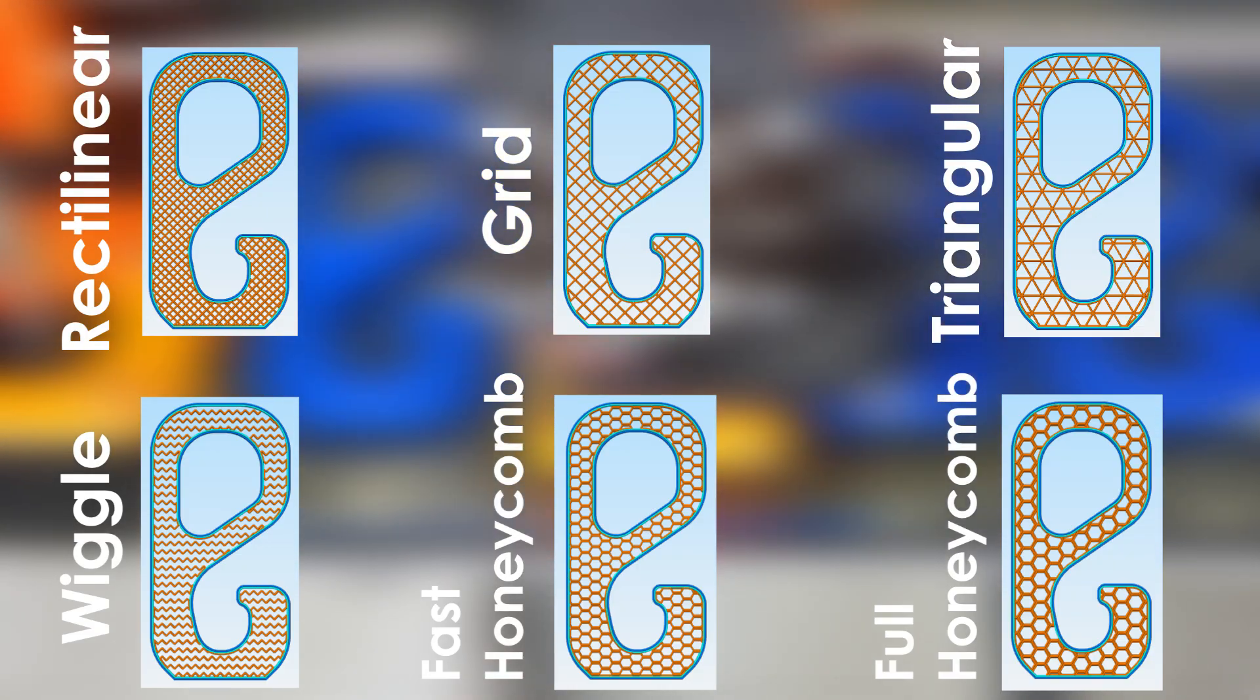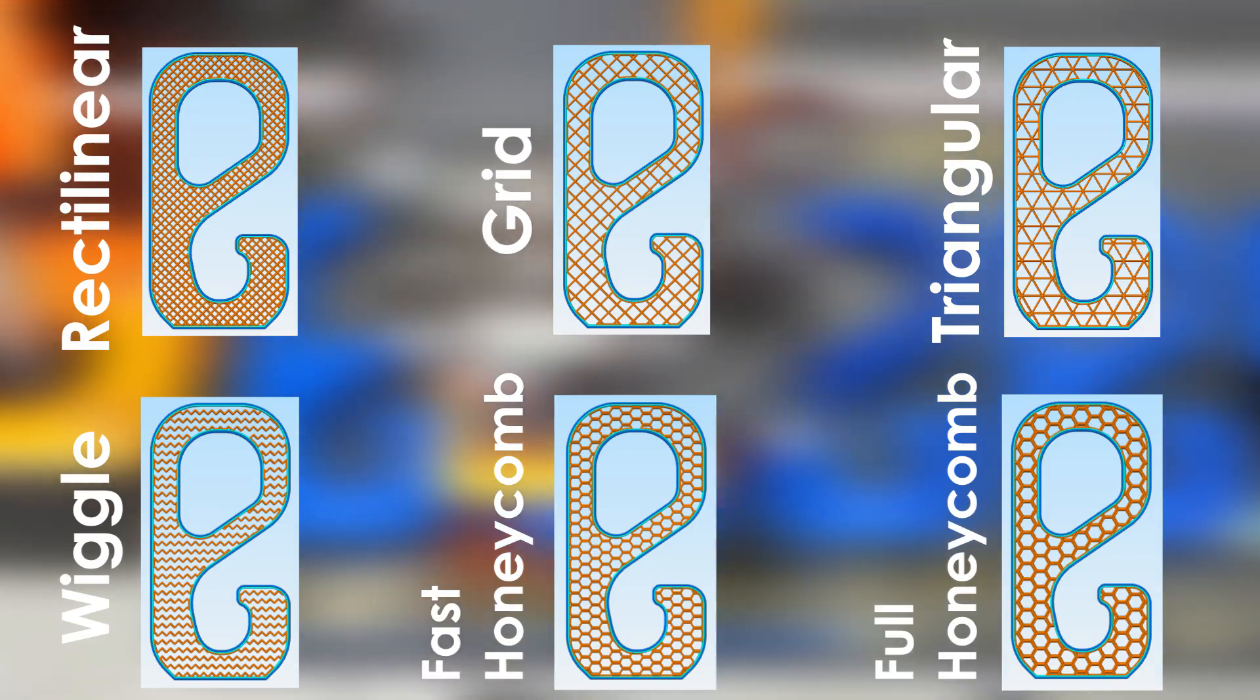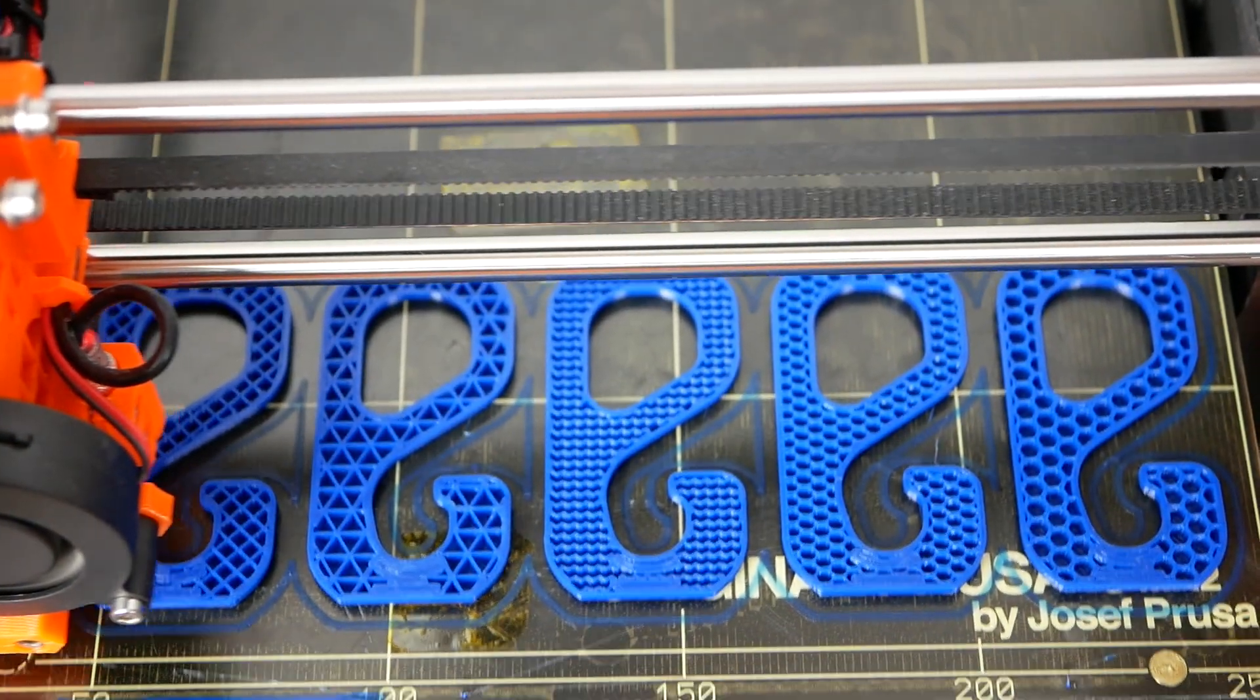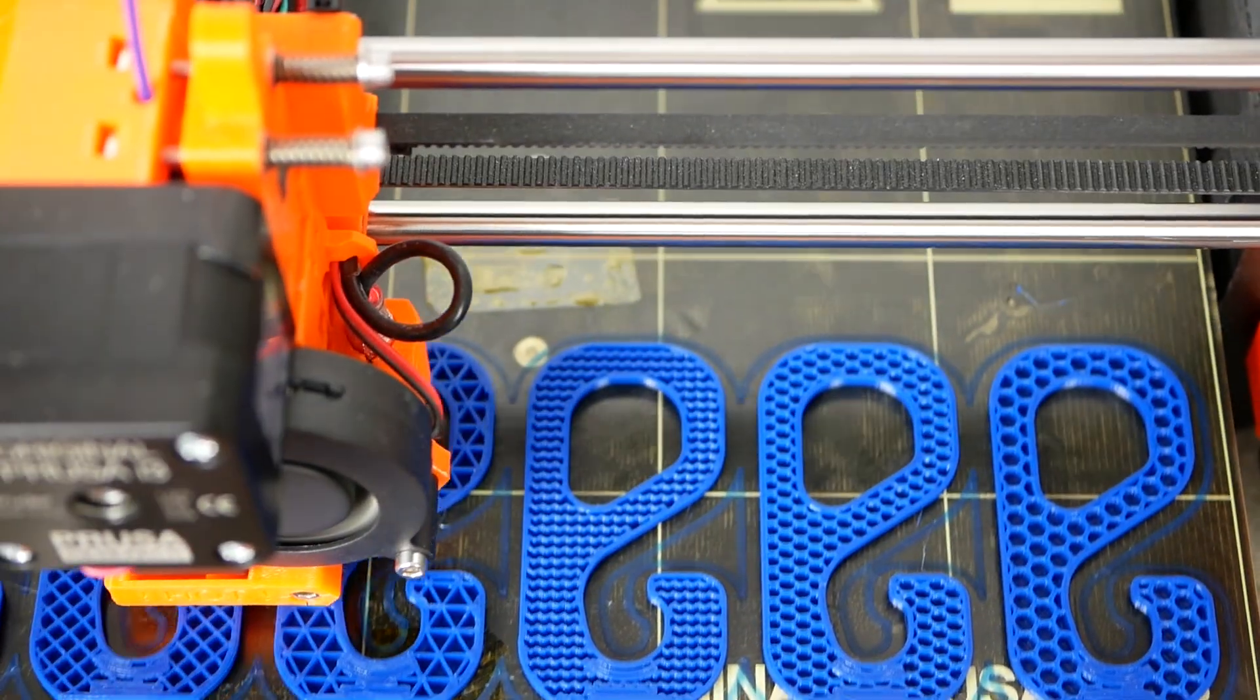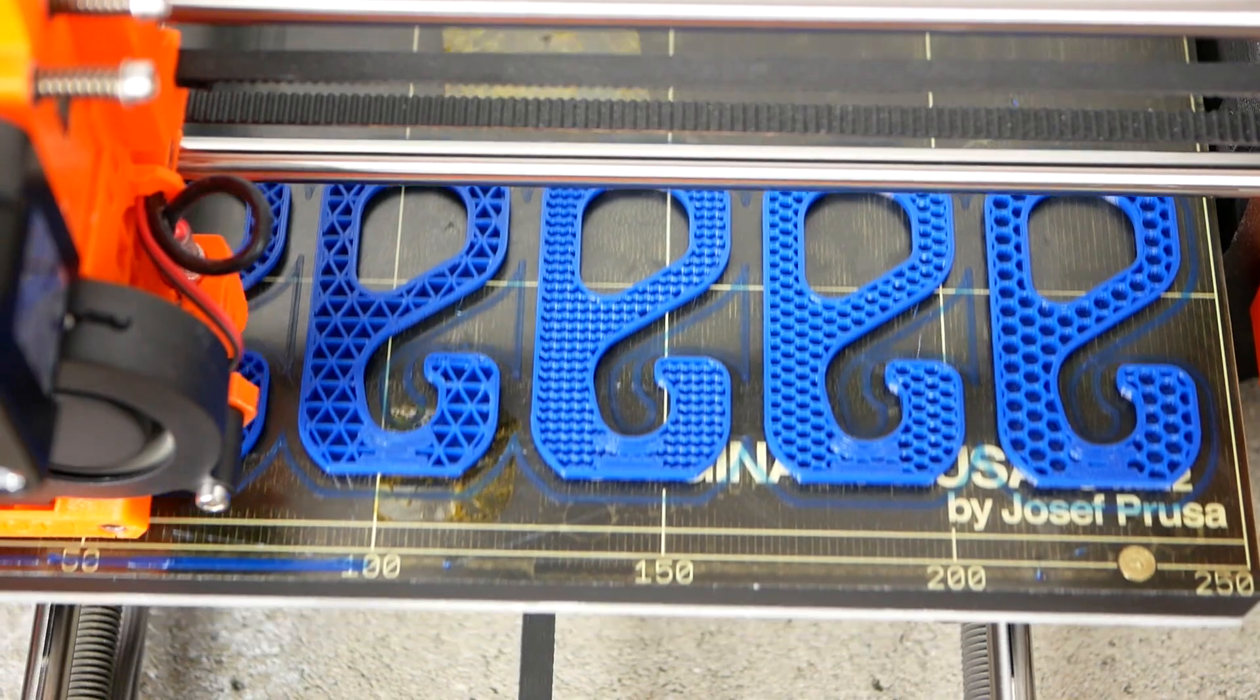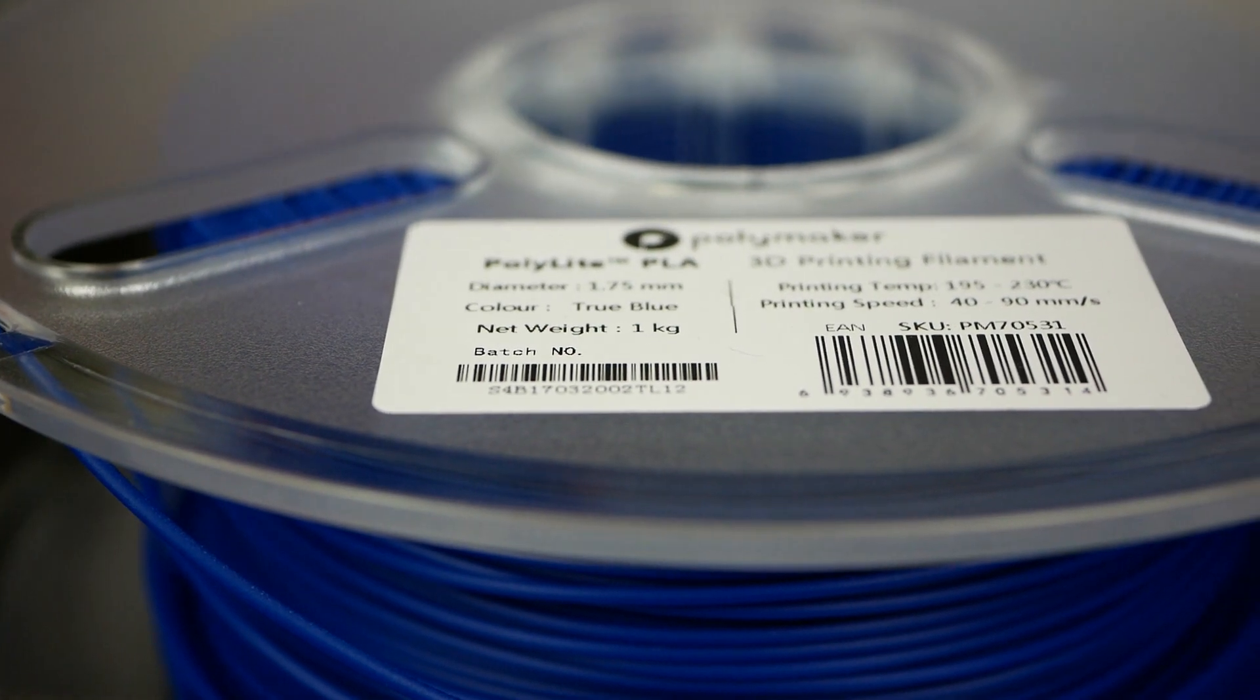Rectilinear is usually the default and prints the fastest whereas Wiggle is probably more for aesthetic purposes. Like for most of my parts these hooks were printed with only 2 perimeters and 4 bottom and 5 top layers at 0.2mm layer height. All the parts were printed in Polylight PLA by the way.